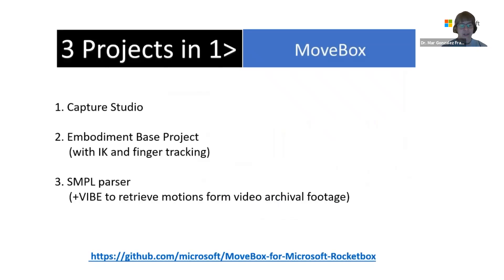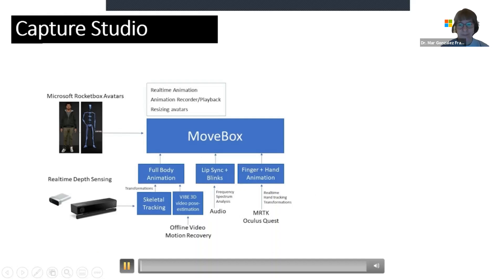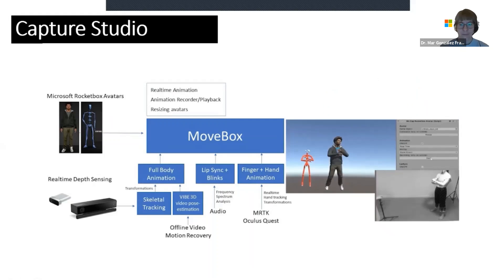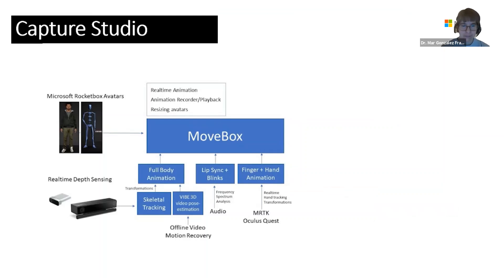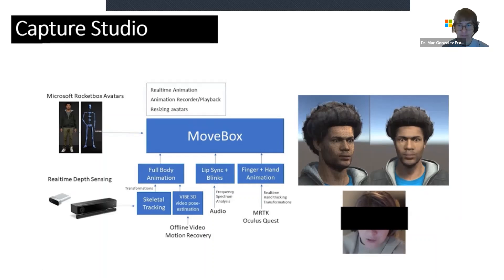It really is three projects in one. We have the capture studio, which I'll explain now. Then we have a base project for embodiment, in which you enter and see yourself inside an avatar — with inverse kinematics of the upper body and finger tracking — all of this open source and free. The third project is the simple parser, which can be used to retrieve motions from archival video footage. Using depth sensing cameras such as Azure Kinect or Kinect version 2, the toolbox tracks a user's 3D motion and transforms that data into a full-body animation clip. Combined with basic audio analysis, we can add facial animations so avatars are lip-synced, animating the jaw and adding natural blinks.